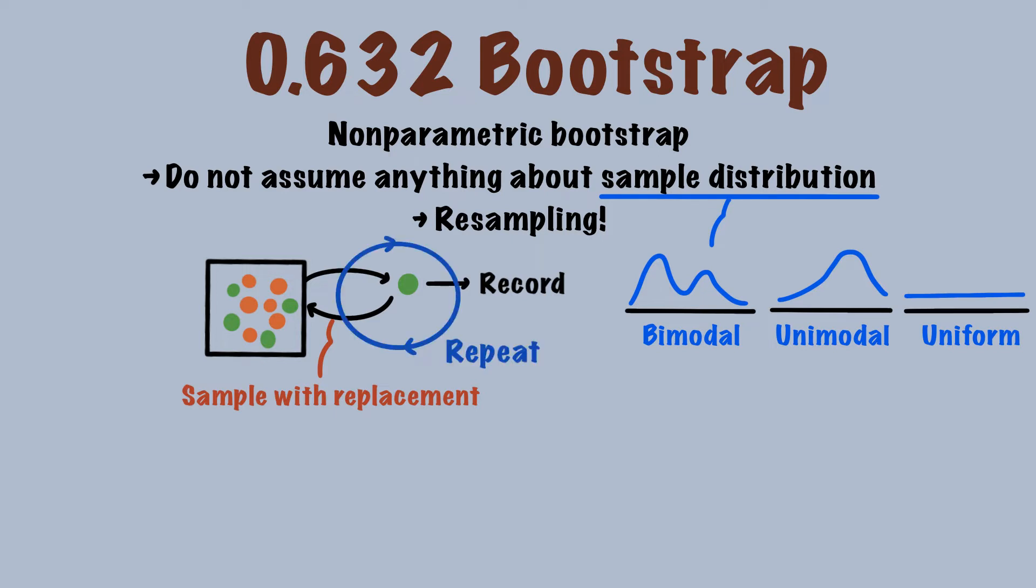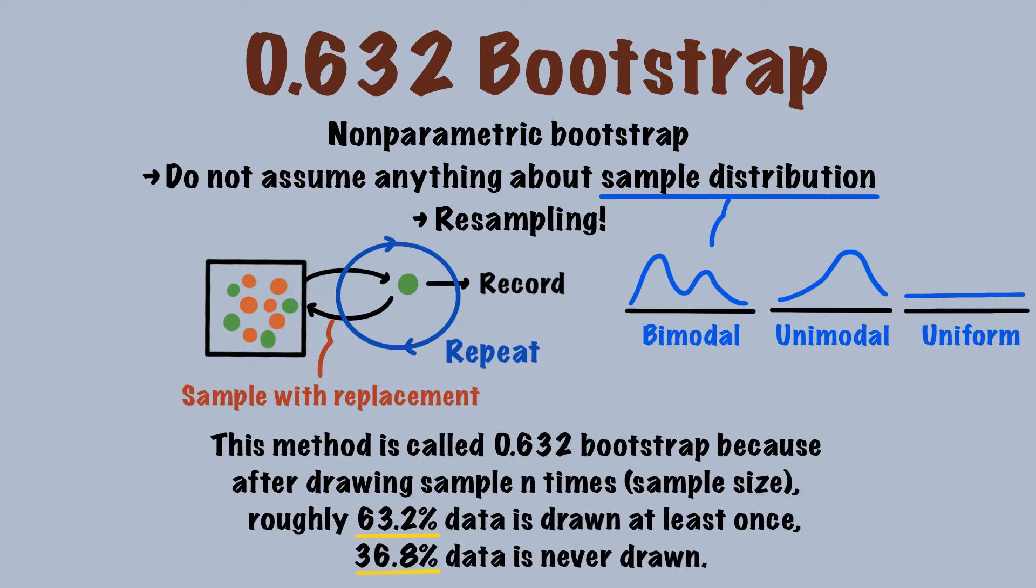Next, we repeat this process several times, so it's called resampling. One thing to note is that there are always some samples that are never drawn, since some samples are drawn multiple times. Generally speaking, after drawing samples from a database n times, which is the total number of data points, around 63.2% of data is drawn at least once, and 36.8% of data is never drawn. So this method is called 0.632 bootstrap.